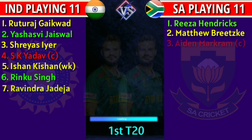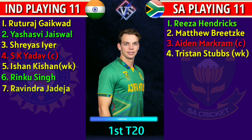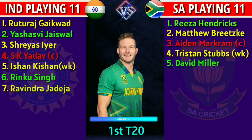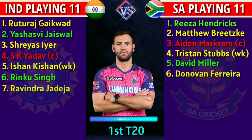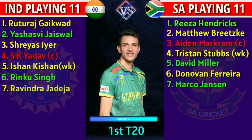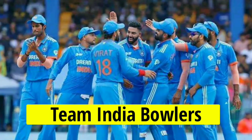South Africa Middle Order: 3. Aiden Markram — Captain and right-handed batsman, 4. Tristan Stubbs — right-handed wicketkeeper batsman, 5. David Miller — left-handed batsman, 6. Donovan Ferreira — all-rounder, 7. Marco Jansen — left-arm fast bowler.